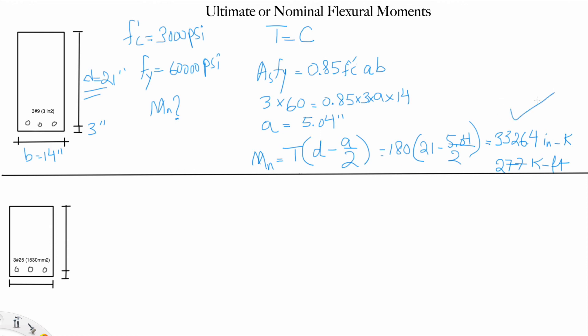That's it, simple as that. That's the nominal moment. Let's do the other example. I'm trying to solve in SI because I want you guys to try to solve in both units. We have d is 430 mm, the cover is 70 mm, and b is 300 mm.